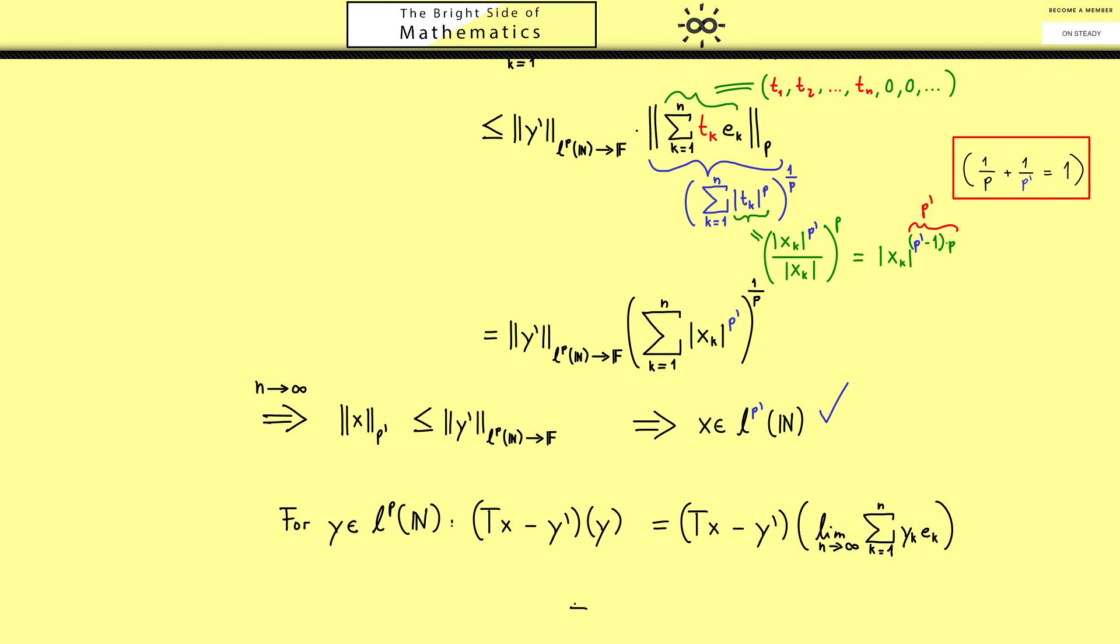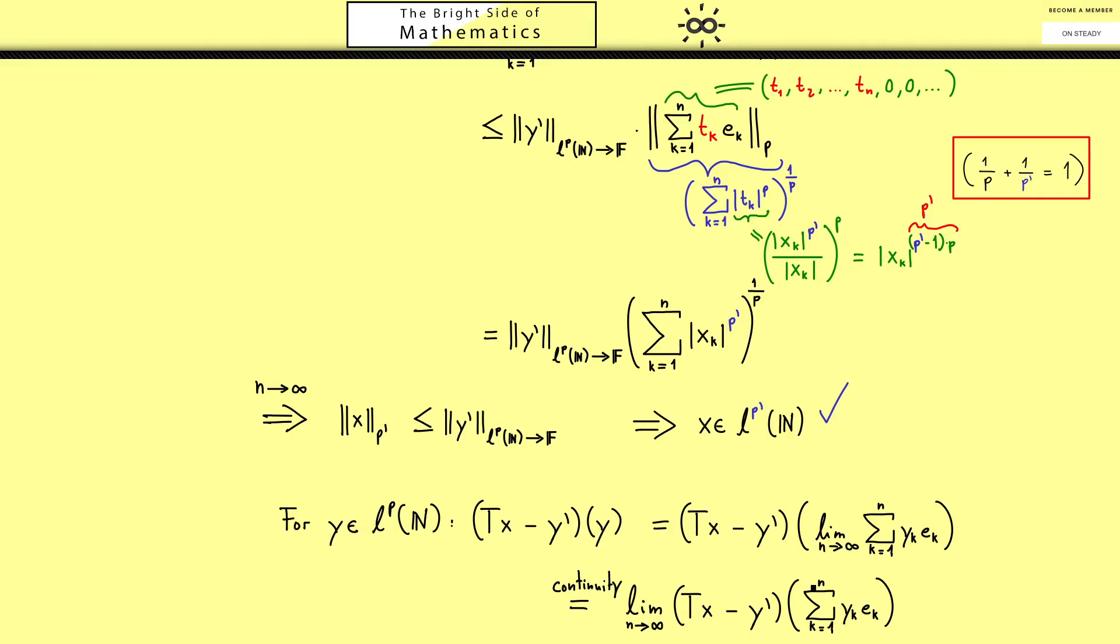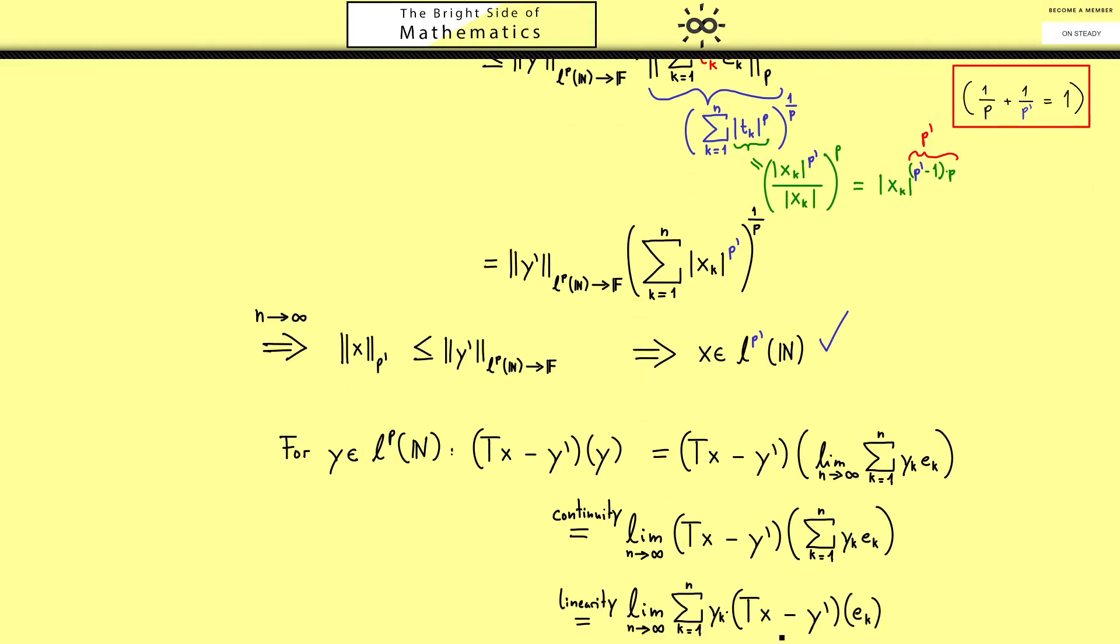Now let's use the continuity of both maps to bring the limit in front. And then the next step of course would be to use the linearity to bring the sum in front. Now you finally see where the definition of x actually came from. It was chosen in such a way that we get 0 out here. So please check by the definition of Tx: if you apply Tx to ek then only the number xk remains for the outcome. That's simply the case because ek has a lot of zeros in its sequence. In summary the limit and the sum don't matter, the only thing that remains is the 0 inside so we get out 0.